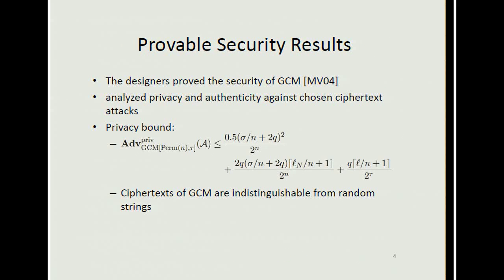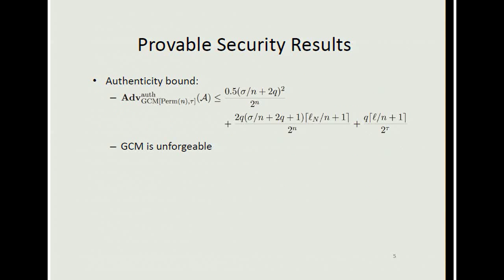The designers proved the security of GCM, analyzing privacy and authenticity against chosen ciphertext attacks. The privacy bound roughly says that ciphertexts of GCM are indistinguishable from random strings, and the authenticity bound roughly says that GCM is unforgeable.